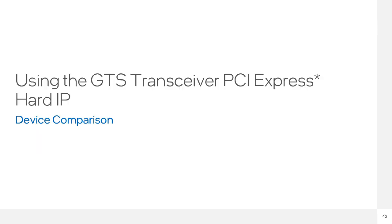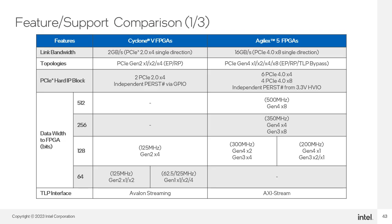Before we end this training, for those migrating from older FPGA families, we will do a quick comparison of PCIe support between GTS transceivers and Cyclone 5 devices. In terms of topologies, Cyclone 5 supports PCIe Gen 2 by 1, by 2, and by 4 in endpoint and root port implementations. Agilex X5 supports Gen 4 by 1, by 2, and by 8 in endpoint, root port, and transaction layer bypass implementations.